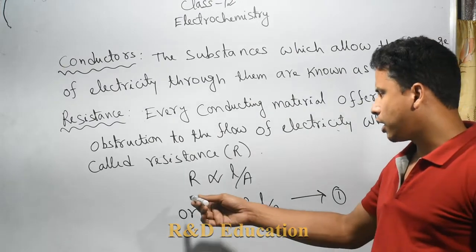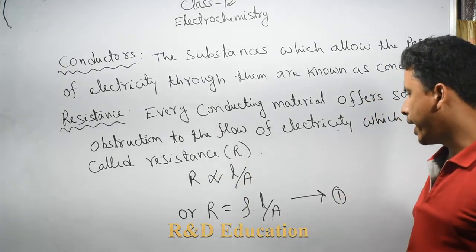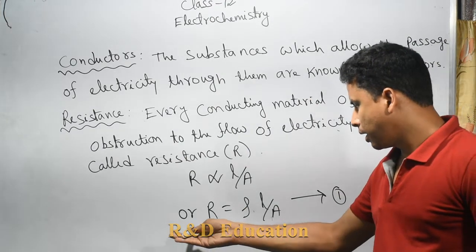We have written that R is proportional to L by A. To remove this proportionality sign,